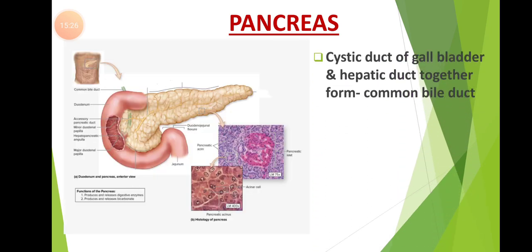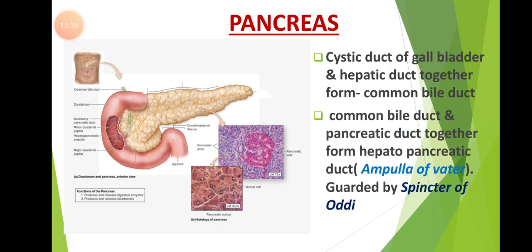The cystic duct and hepatic duct together form a common bile duct. This common bile duct and the pancreatic duct arising from the pancreas together form a hepato-pancreatic duct, also called the ampulla of Vater. The ampulla of Vater opens into the duodenum, and the opening is guarded by the sphincter of Oddi.